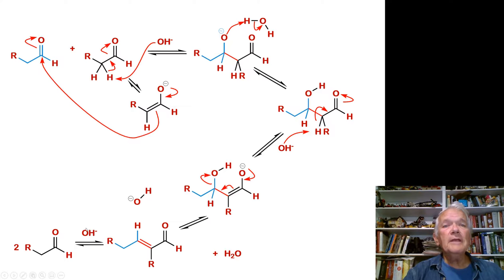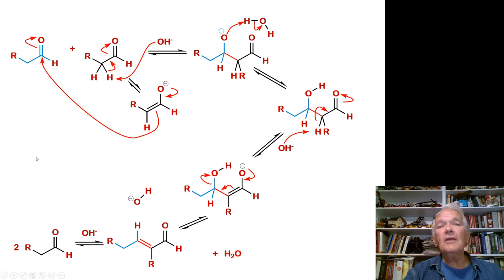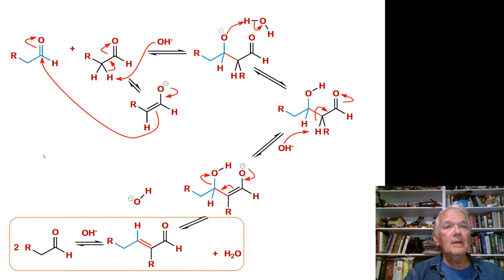These things are all in equilibrium — when they sit in aqueous solution, everything is going back and forth and you get a product mixture. One thing you always have to worry about in these reactions is that they can go backwards. Sometimes the reverse reaction is more important than the forward. The net reaction gives you an enal.